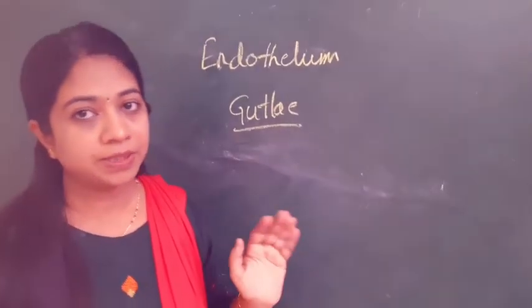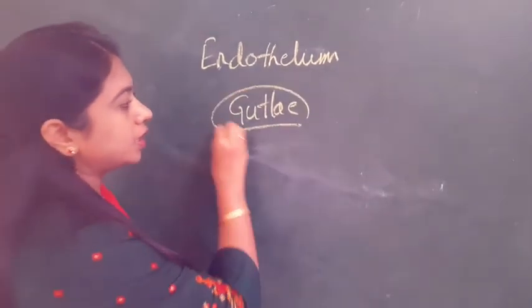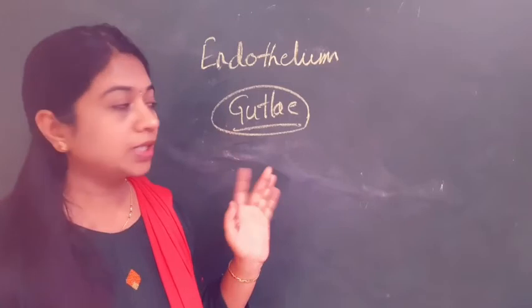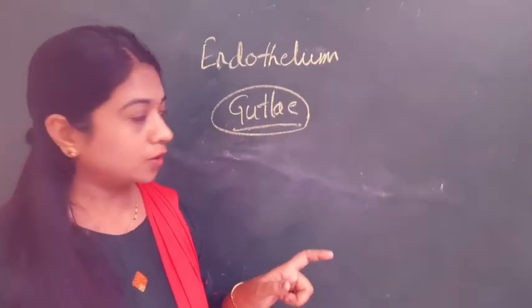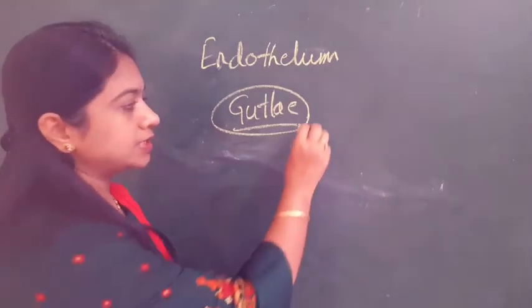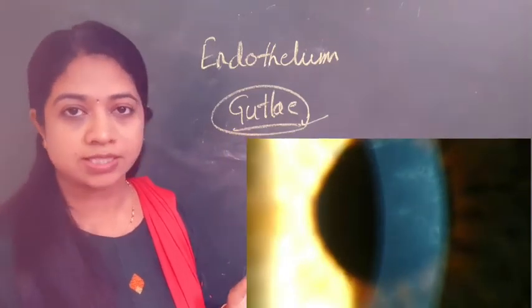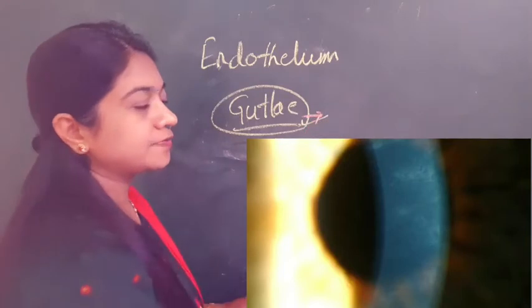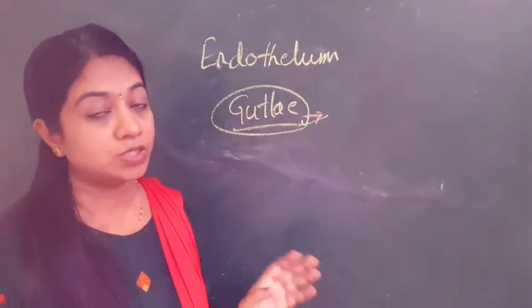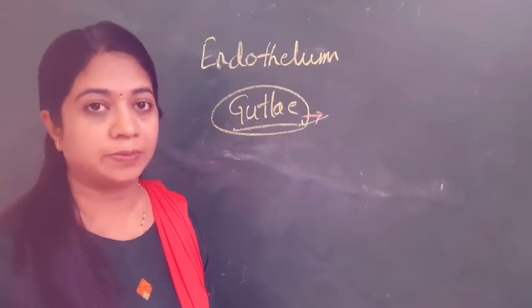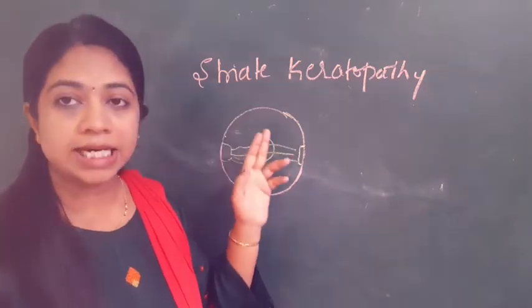After examining the epithelium and stroma, proceed to examination of the endothelium. Under high magnification, make a wide angle between the illumination and observation unit and focus on the endothelium — there you may find guttae. Guttae are drop-like excrescences seen on the posterior surface of the cornea and are one of the signs of Fuchs corneal endothelial dystrophy. It is very important to examine the endothelium in corneal edema patients.